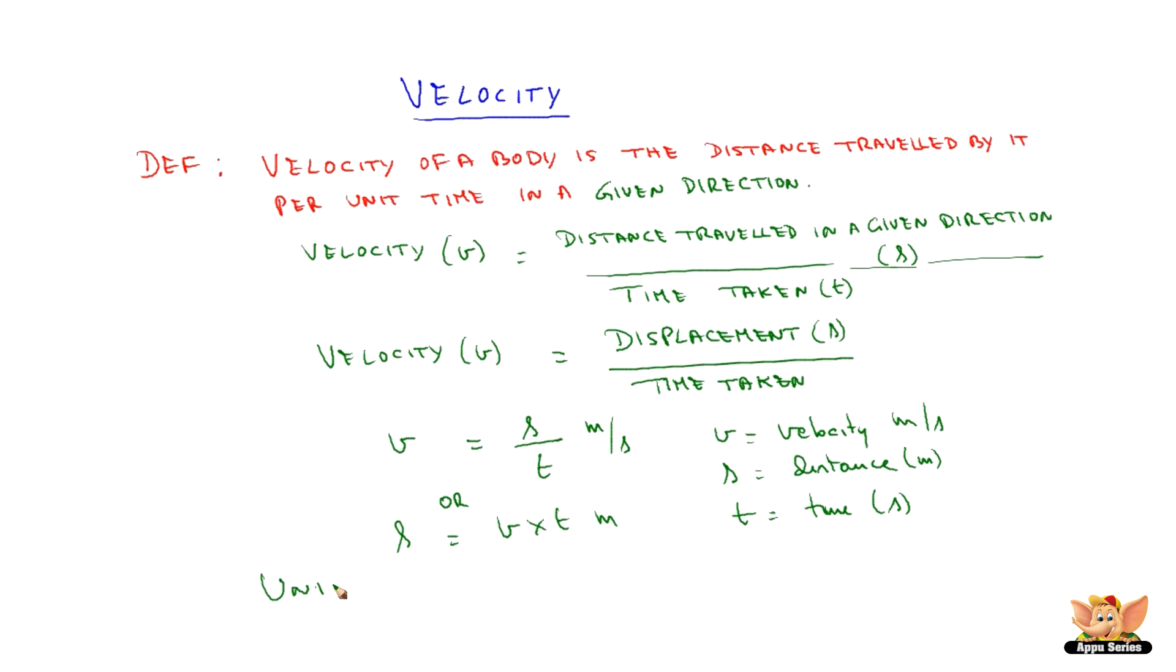So the units where velocity are meter per second or meter second minus one and it is a vector quantity as it depends on the direction as per the definition.